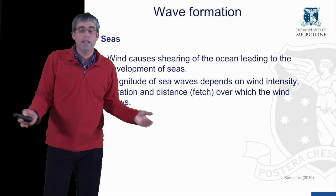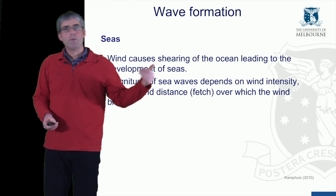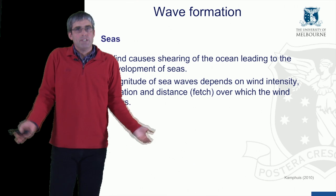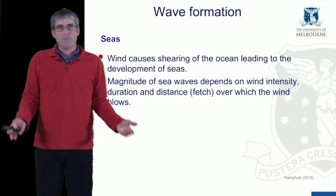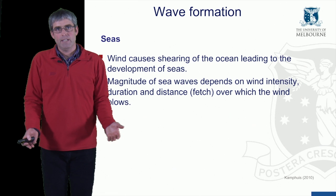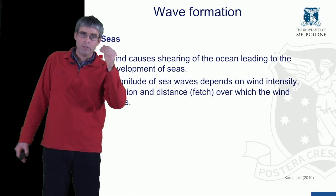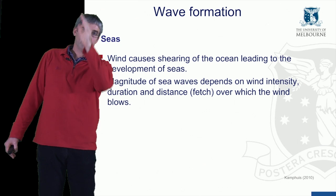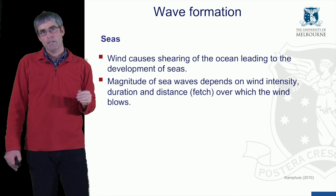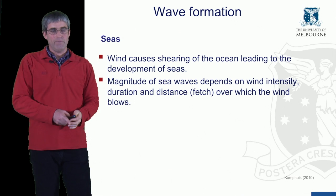For example, if you're in a narrow, long inlet and the wind is blowing across the inlet, there's not much distance for the waves to develop, so you won't get big waves. But if the wind blows along the length of the inlet over several kilometres, you can get much bigger waves developing at the downwind end of that inlet.